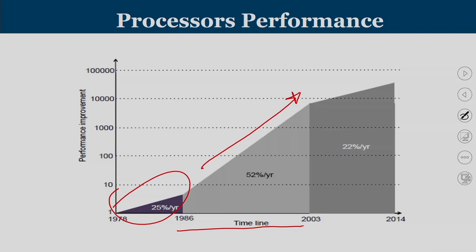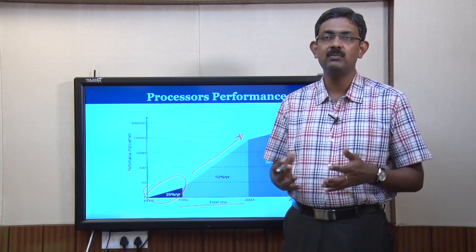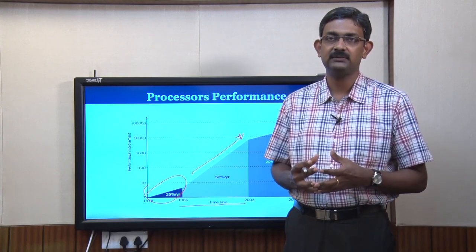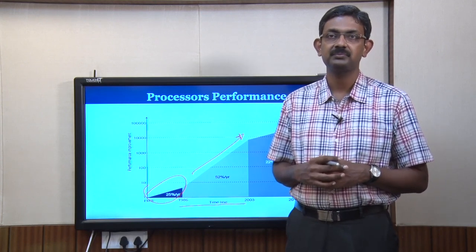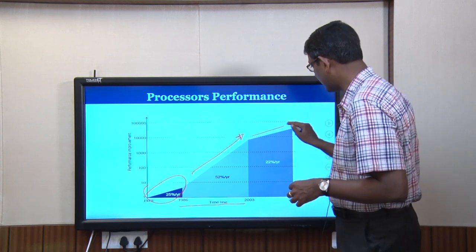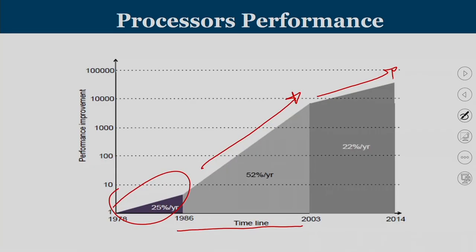Close to around 2003 to 2005, architects found that almost all available types of exploitation inside processors were reaching a saturation point. That is why in the last decade we were not able to improve much in terms of processor performance. There are a couple of reasons for it, which we will try to find out.